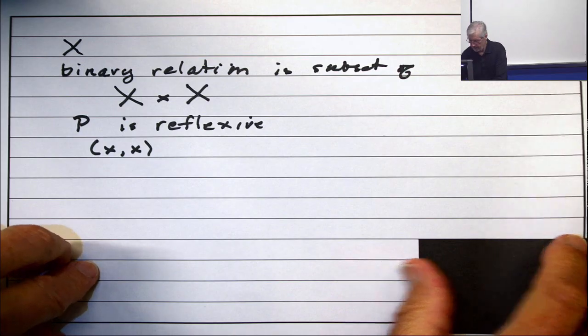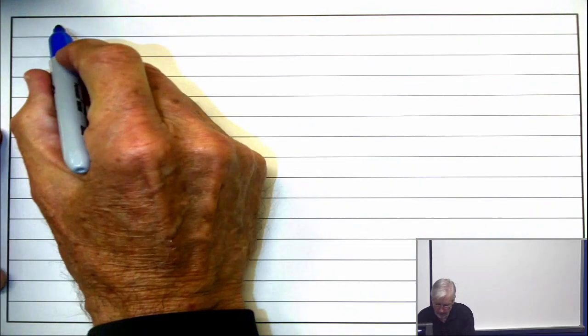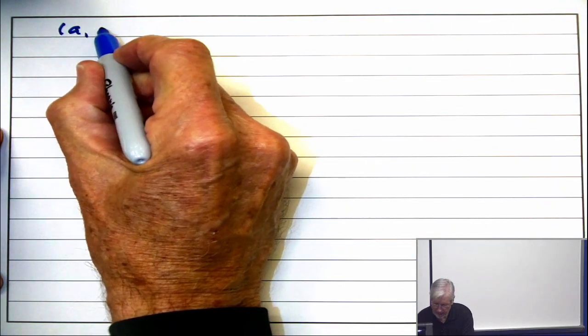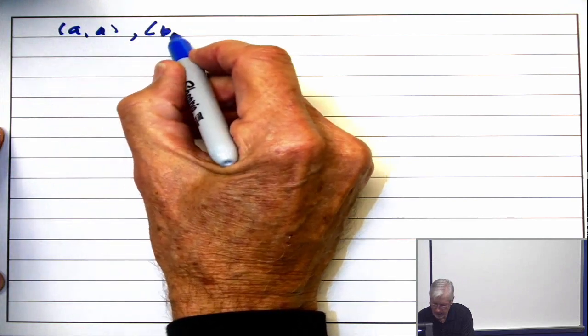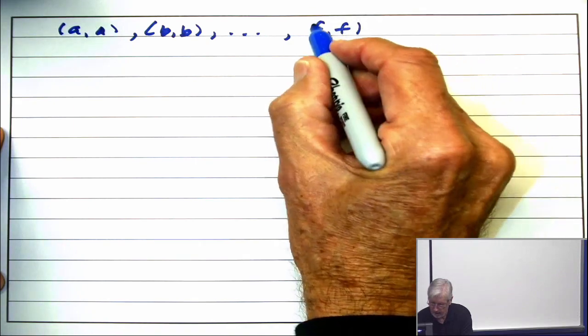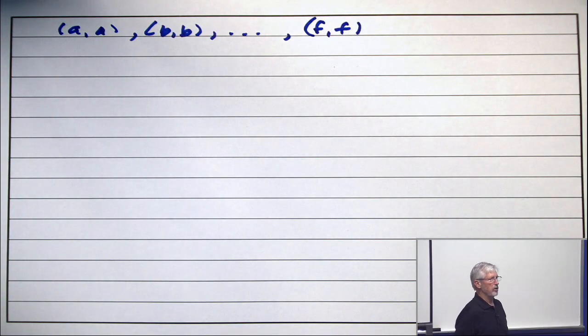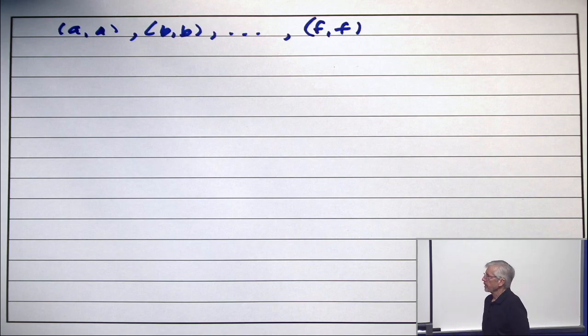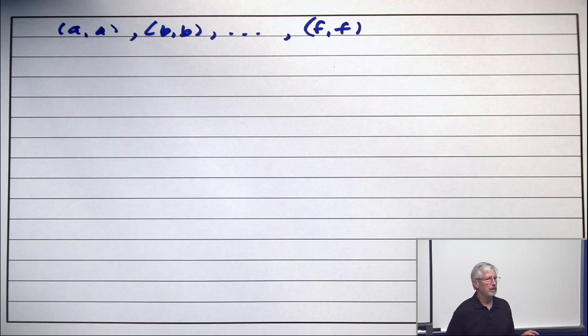So are we all on the same page that in writing down the binary relation associated with this, you would start by putting in all the pairs like A comma A, B comma B, etc. up to F comma F? I'm going to save a little space and not write the rest of them. But let's write some more. Question: Would I write A comma E, yes or no?